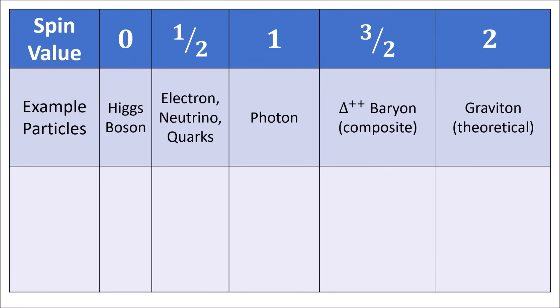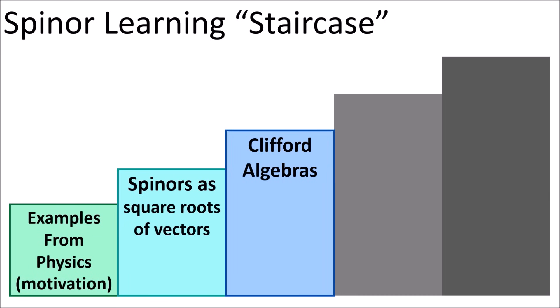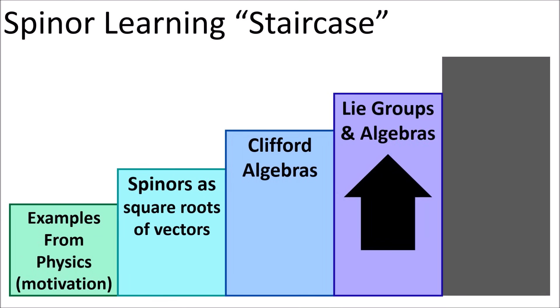Any theory of quantum mechanics that incorporates relativity will require us to understand how different particle types transform under a change of reference frame. To understand this, we need to learn the theory of Lie groups and Lie algebras.